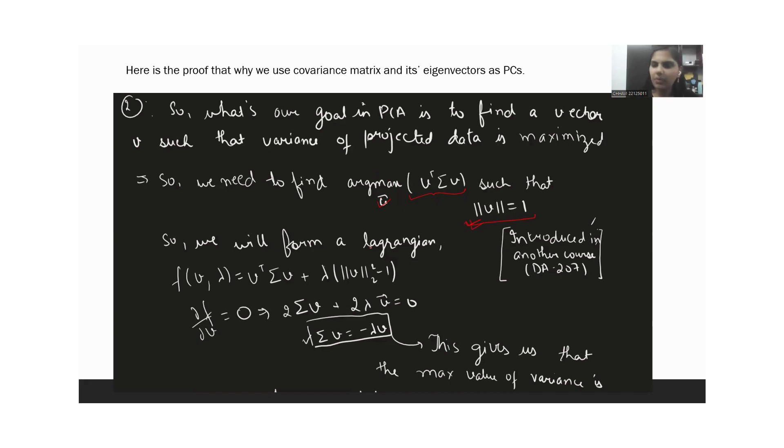So we will form a Lagrangian to solve this. A function of V and Lagrangian would be, we have to maximize this subject to the condition this. Now this would always be 0. So adding a multiplier of this would be 0 and would not contribute anything to this function.